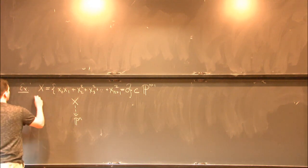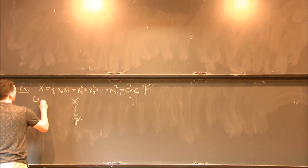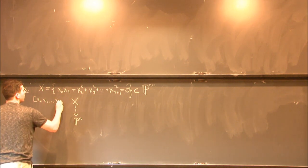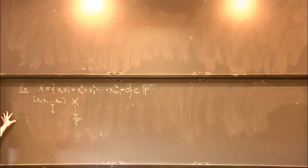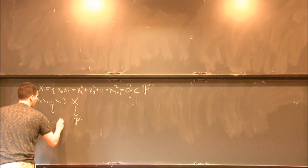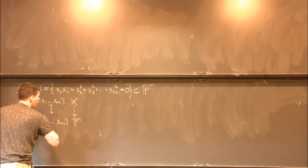So all this map is, you take a point on this hypersurface, and you forget the first coordinate. OK? So there's a map.